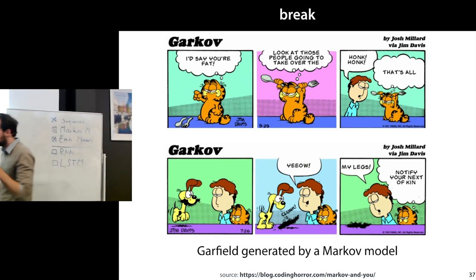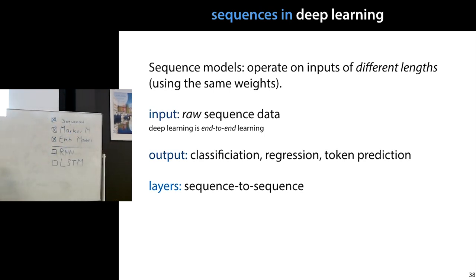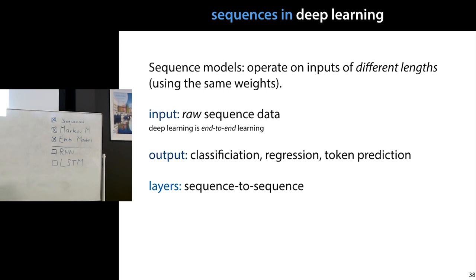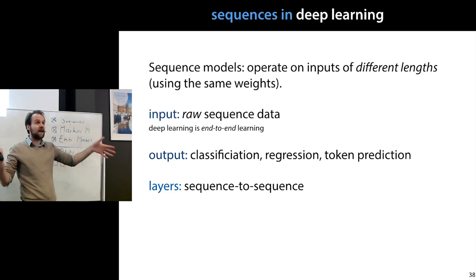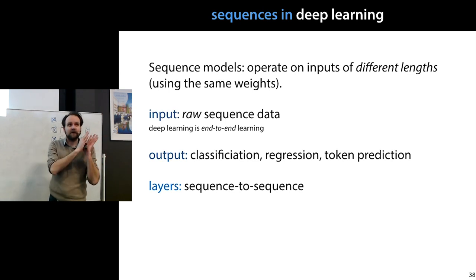Let's get started on part two: applying neural networks to sequences, or deep learning on sequences. We want a sequence model — a neural network that operates on inputs of different lengths with a fixed set of weights. The number of weights stays the same regardless of sequence length. The input is raw sequence data, as close to the original data as possible, capturing as much information as we can.